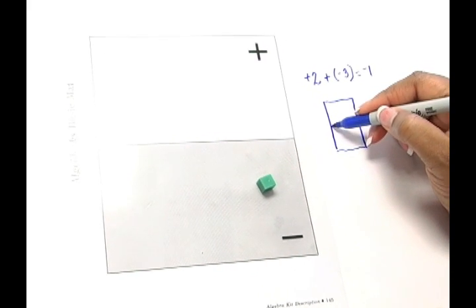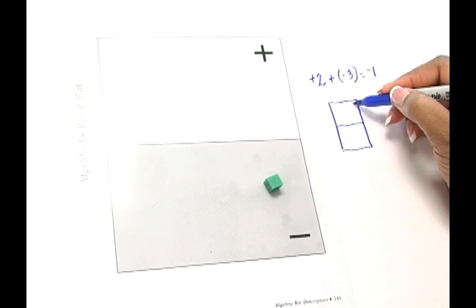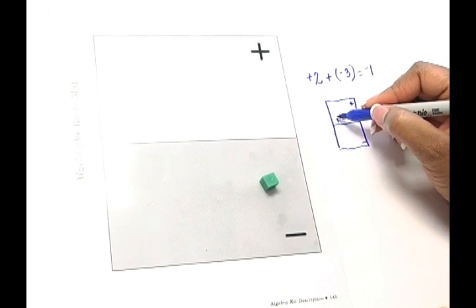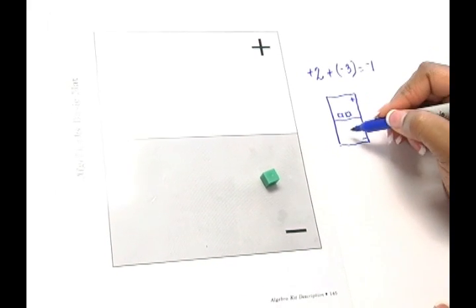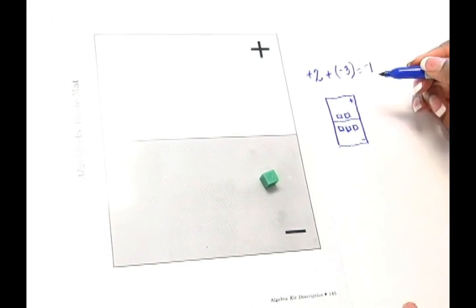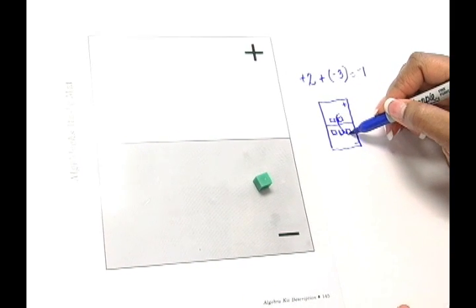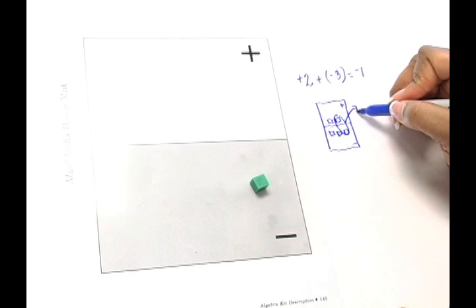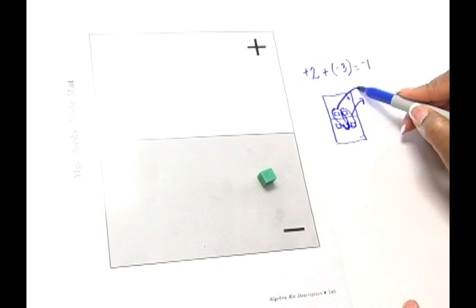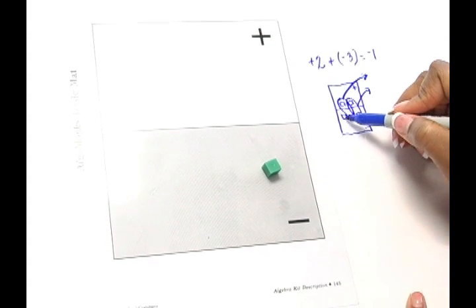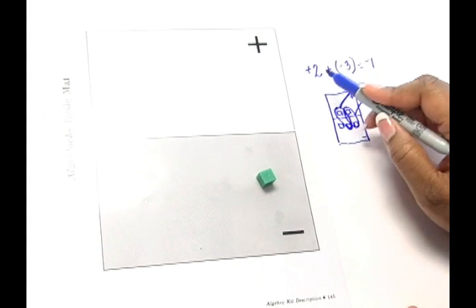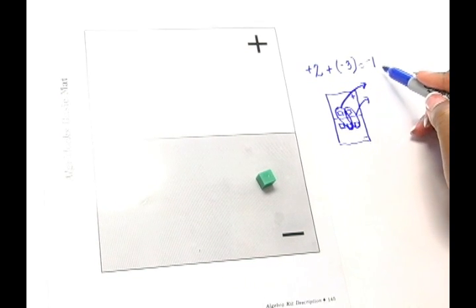We also want our students to model that by drawing what they just did. So we can make a mini mat on paper. Here's our positive region. Here's our negative region. We modeled a positive 2 and a negative 3. Then we looked for our zero pairs so we could clean our mat. So here's a zero pair and we're going to model that we're removing that from the mat. Here's another zero pair and we're going to model that by removing it from the mat. We're only left with that one integer in the negative region. So we clearly modeled that a positive 2 plus a negative 3 is equal to negative 1.